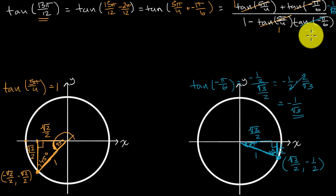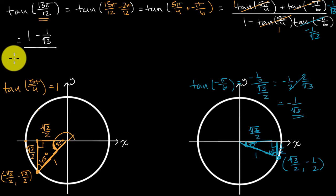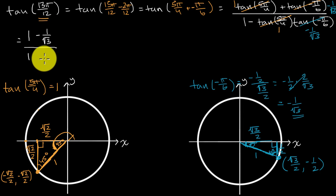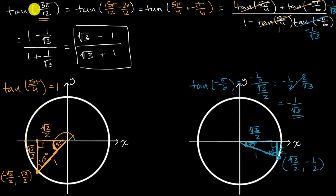Putting it all together, the expression becomes (1 + (−1/√3)) over (1 − (1)(−1/√3)). The negative times negative in the denominator gives a positive, so we get (1 − 1/√3) over (1 + 1/√3). Multiplying numerator and denominator by √3 gives (√3 − 1) over (√3 + 1). And we are done — that's tangent of 13π/12 without using a calculator.